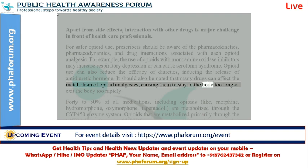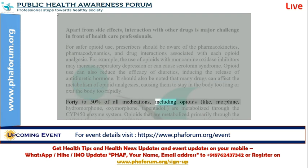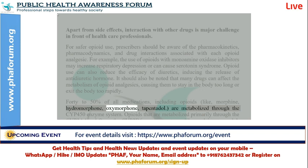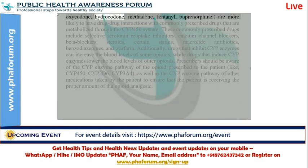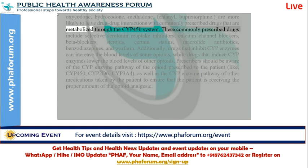Many drugs can affect the metabolism of opioid analgesics, causing them to stay in the body too long or exit the body too rapidly. 40 to 50% of all medications, including opioids like morphine, hydromorphone, oxymorphone, and tapentadol, are metabolized through the CYP450 enzyme system. Opioids metabolized primarily through the CYP3A4 and/or CYP2D6 enzyme systems — like codeine, tramadol, oxycodone, hydrocodone, methadone, fentanyl, and buprenorphine — are more likely to have drug-drug interactions with commonly prescribed drugs metabolized through the CYP450 system.